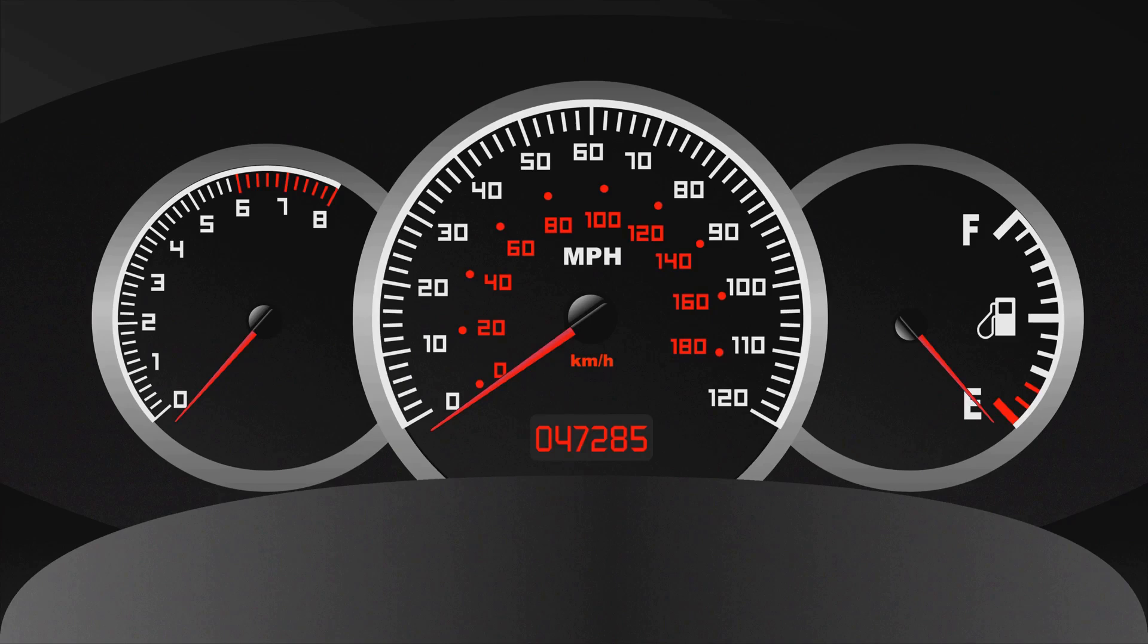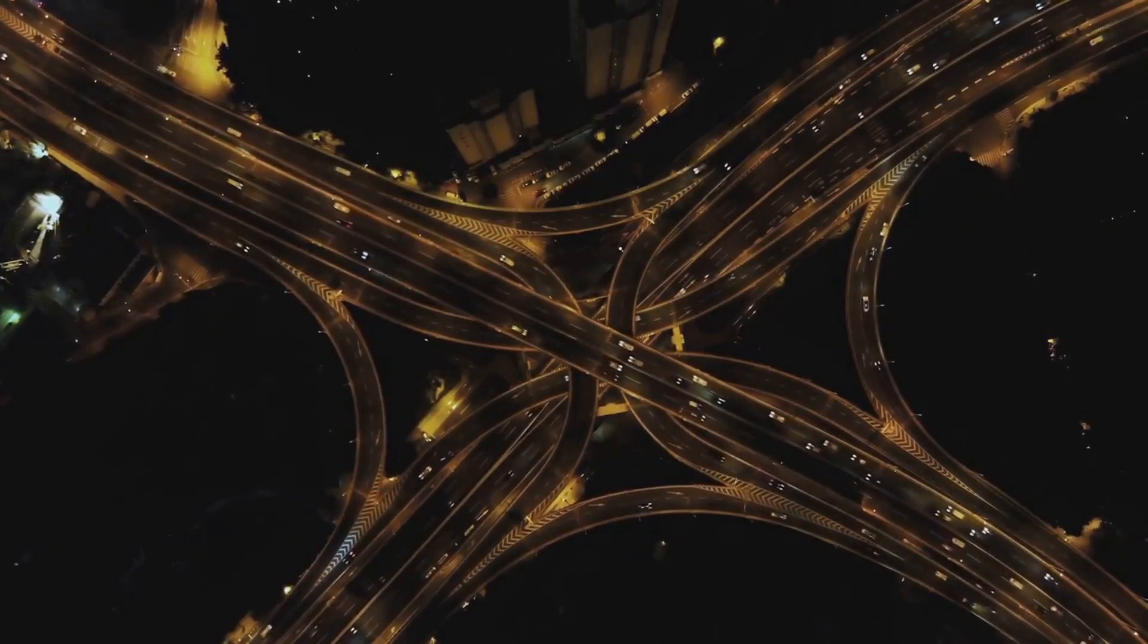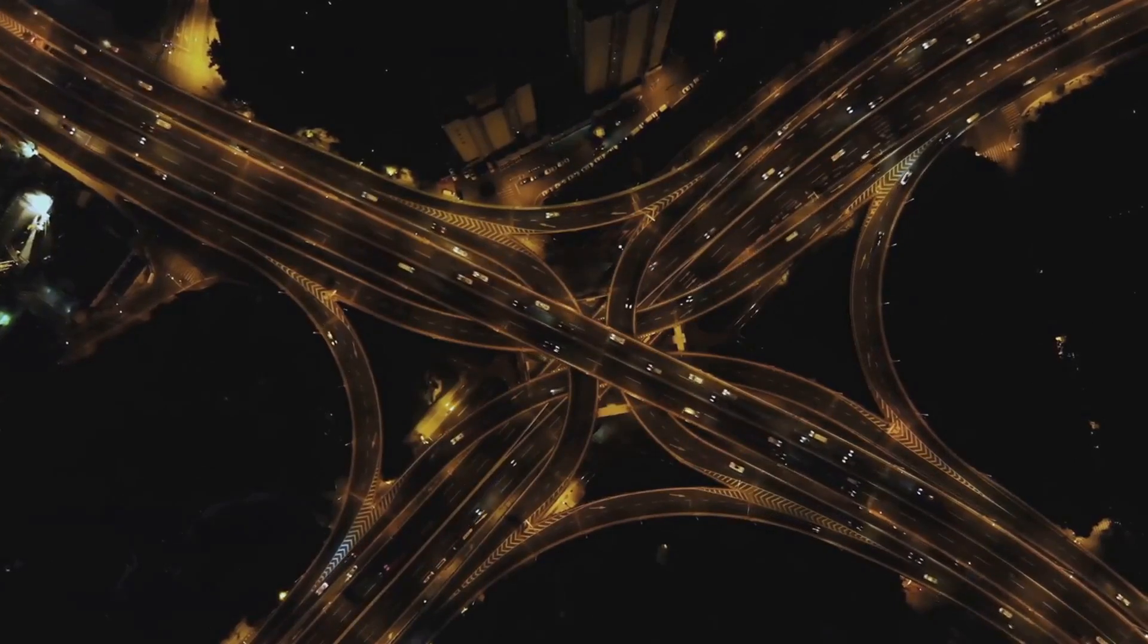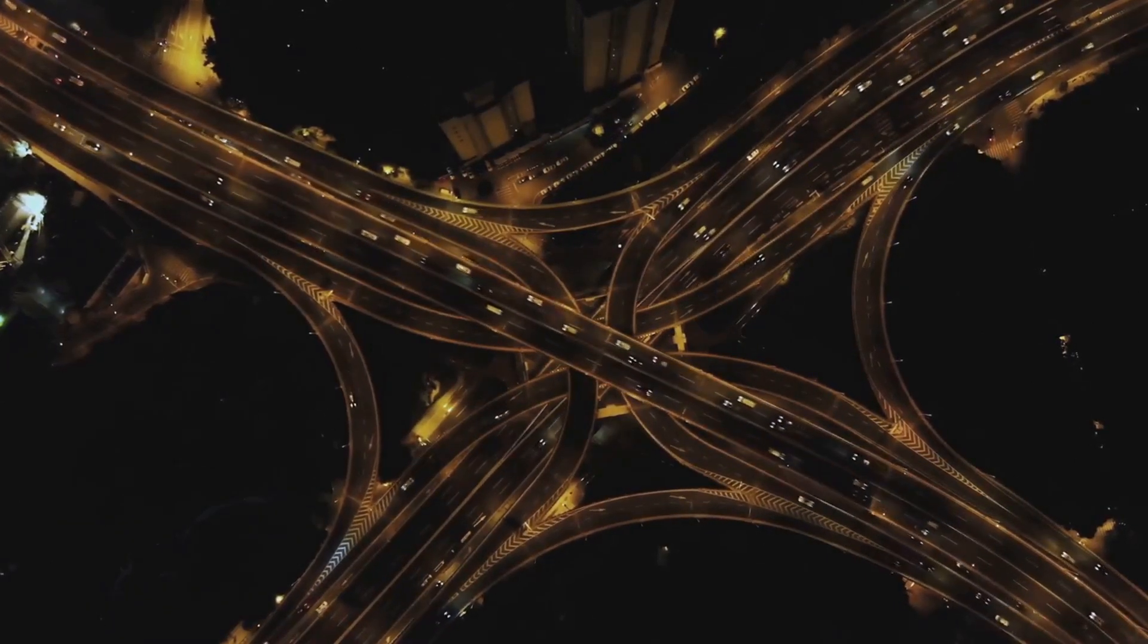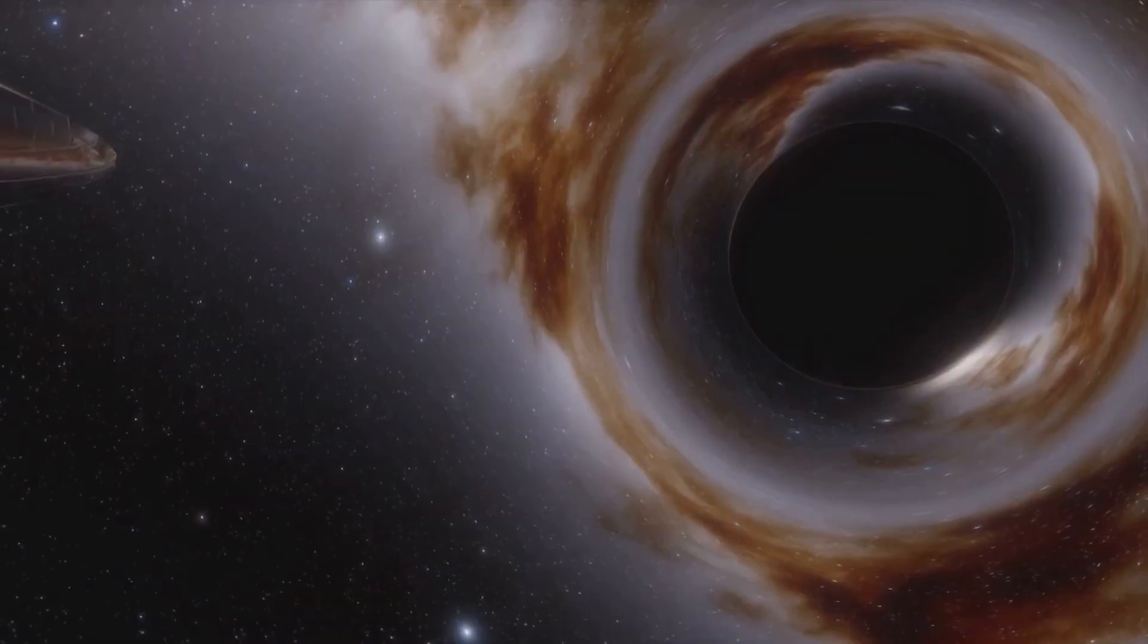Now you might be wondering just how fast is light? Well, hold on to your hats, because we're talking about an incredible 299,792 kilometers per second, or 186,282 miles per second. To put that into perspective, if you could travel at the speed of light, you'd be able to zip around our planet over seven times in just one second. Yes, you heard that right, seven times around the Earth in one second.